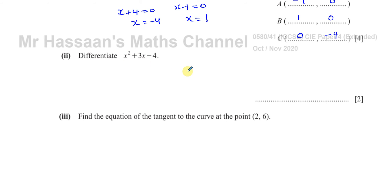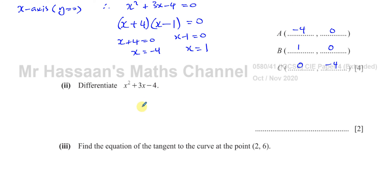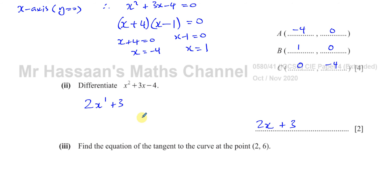The expression x squared plus 3x minus 4 is the equation we've got. When you differentiate an expression, you multiply by the power and take 1 from the power for each term. Differentiating with respect to x gives 2x to the power of 1 plus 3. If it's an x term, the x is dropped. If it's a constant term, it becomes 0. So the differential is 2x plus 3.